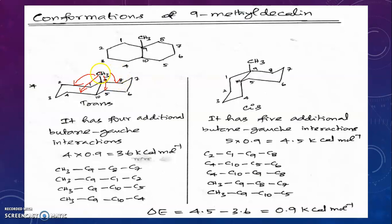When a methyl group is introduced at position 9 or 10, the molecule gains four additional butane-gauche interactions. This increases the energy of the conformer. 4 × 0.9 = 3.6 kcal/mol additional energy for trans-9-methyldecalin.